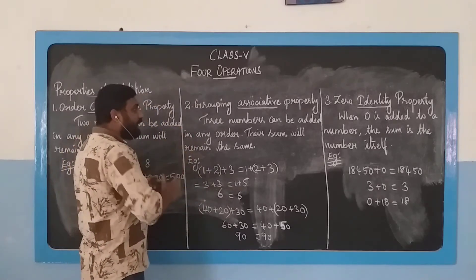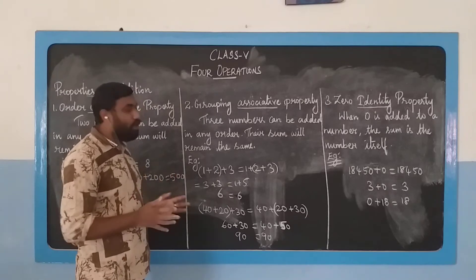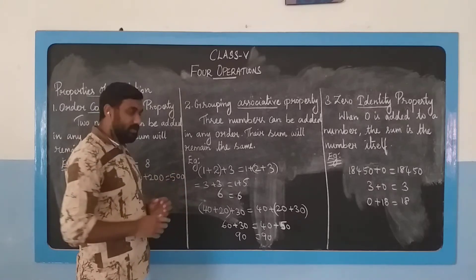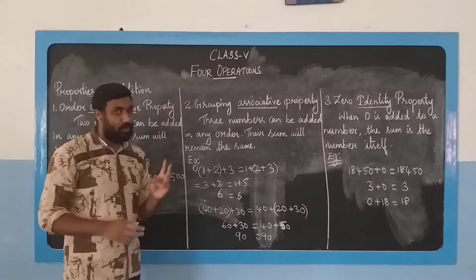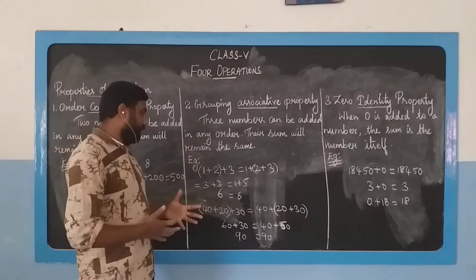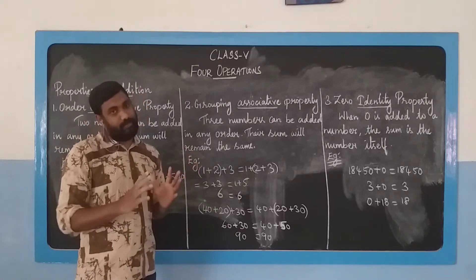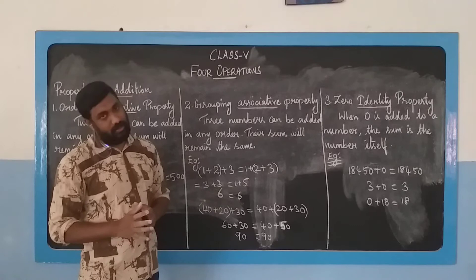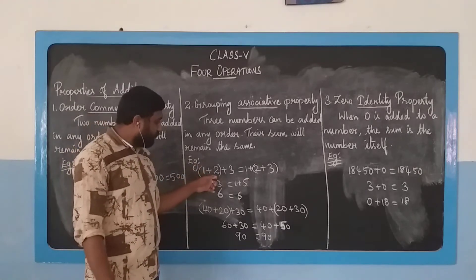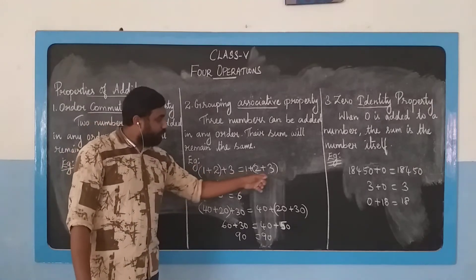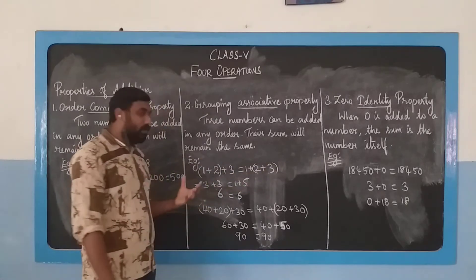What does this property say? Three numbers can be added in any order and the sum remains the same. In the first case we have 3 numbers, and here we have 3 numbers also. Look at the first example. 1 plus 2 plus 3 equals 1 plus 2 plus 3. But we can add brackets around different numbers—brackets around the first two numbers or the last two numbers.